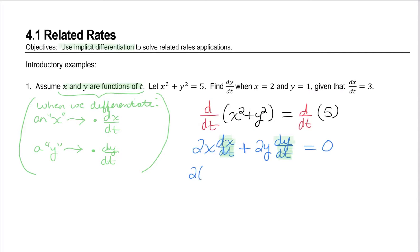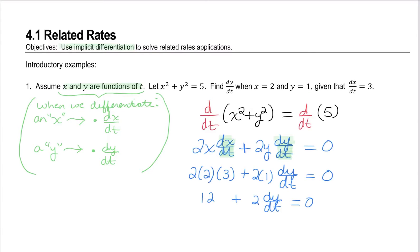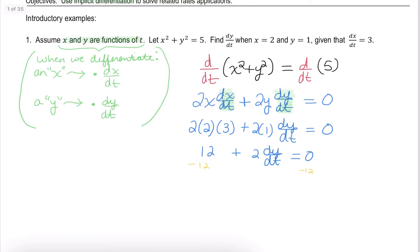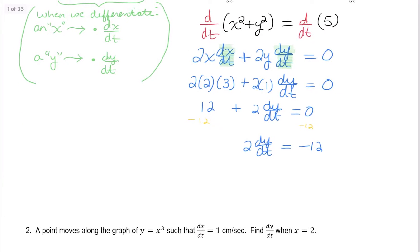We have a bunch of values to substitute in. There are two approaches: first solve algebraically for dy/dt and then sub in numbers, or sub in the numbers first and then solve for dy/dt. I'll try a combination of both — they're both perfectly fine. In this situation, substituting in all the given numbers first left me with 12 + 2(dy/dt) = 0. Subtracting 12 gives 2(dy/dt) = −12, and dividing both sides by 2 gives dy/dt = −6.